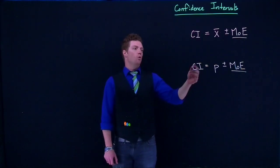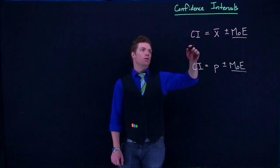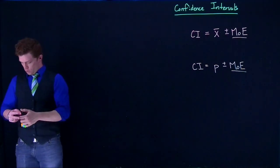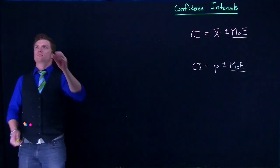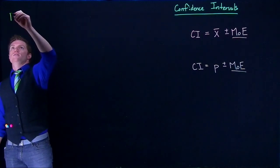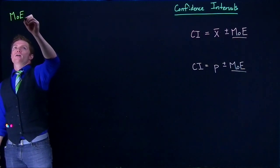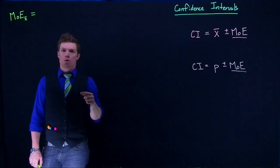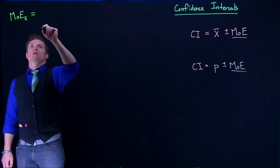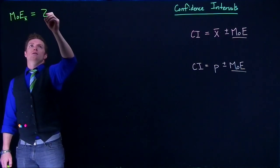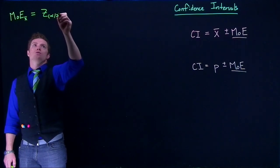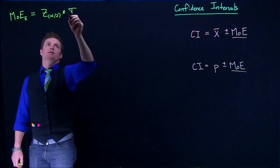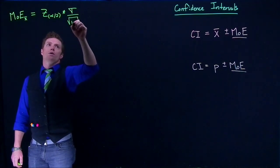Let's go back and open up the margin of error equation for both means and proportions. Starting with means — we'll call it x-bar — and supposing that we know the population standard deviation, the margin of error is z alpha divided by 2, multiplied by sigma divided by the square root of n.